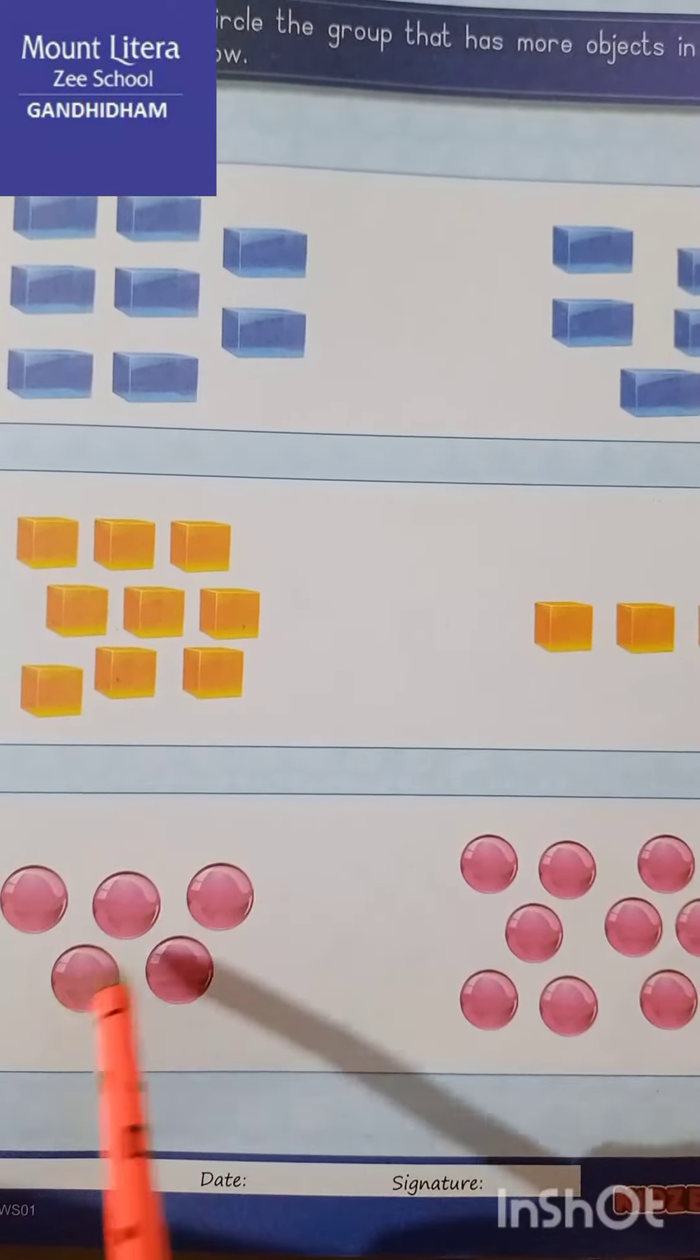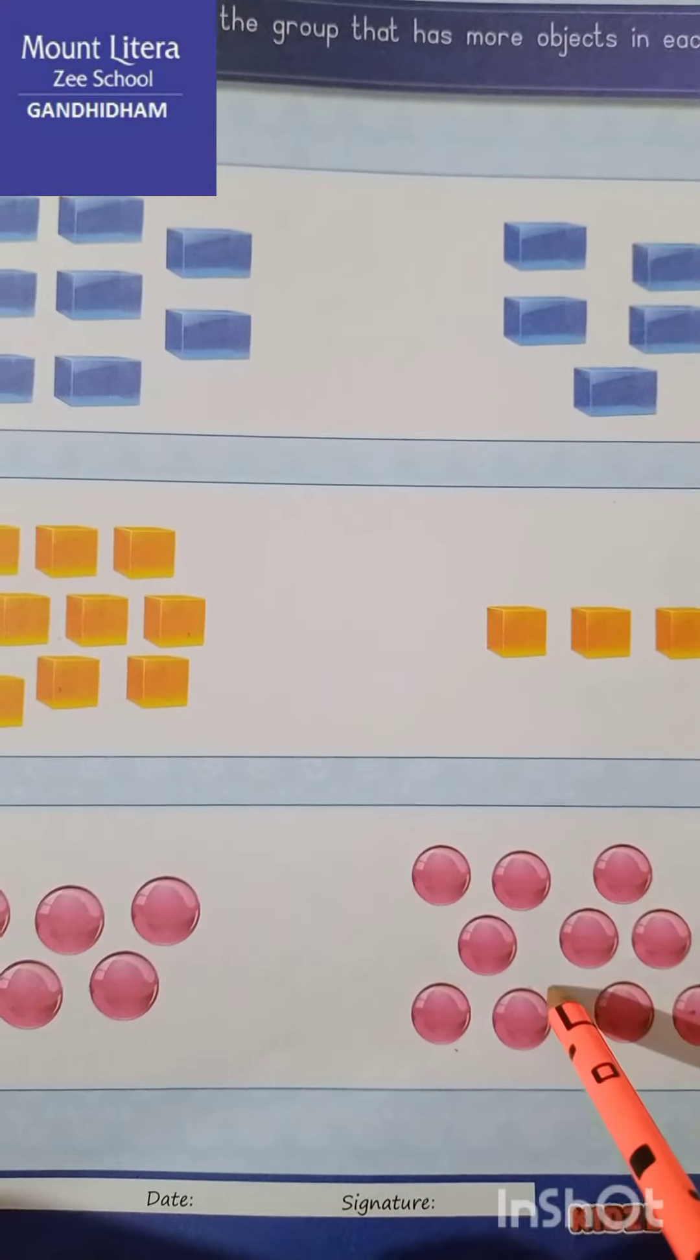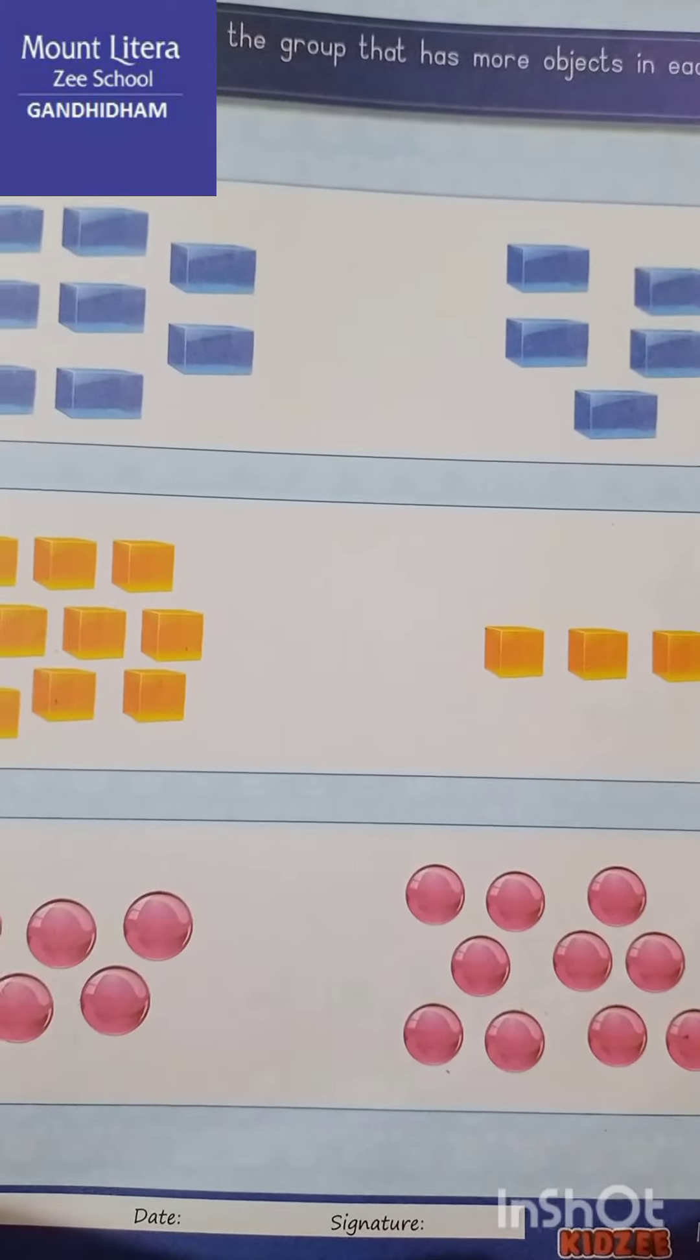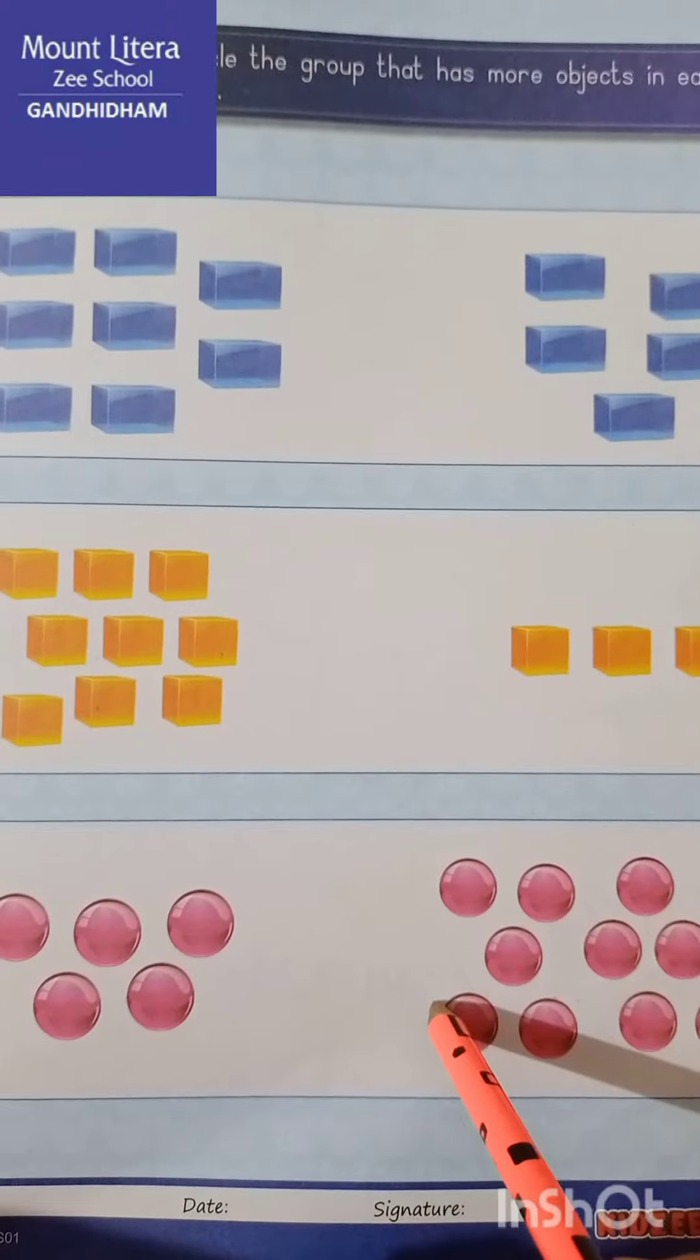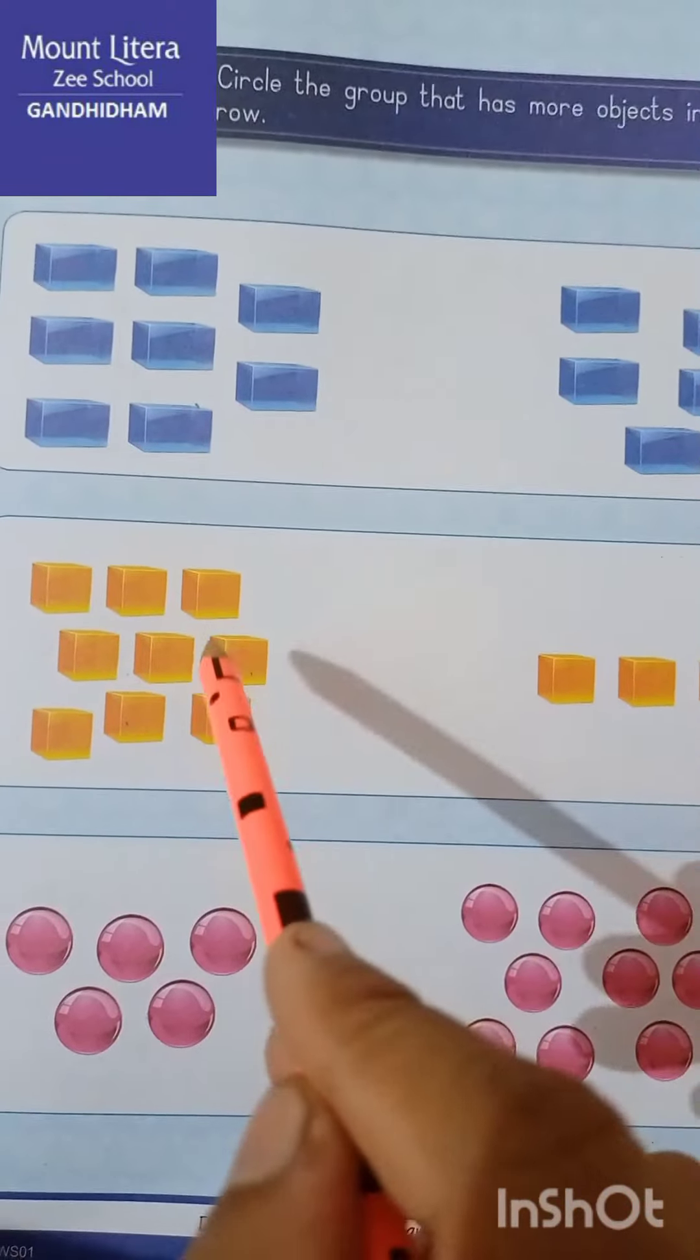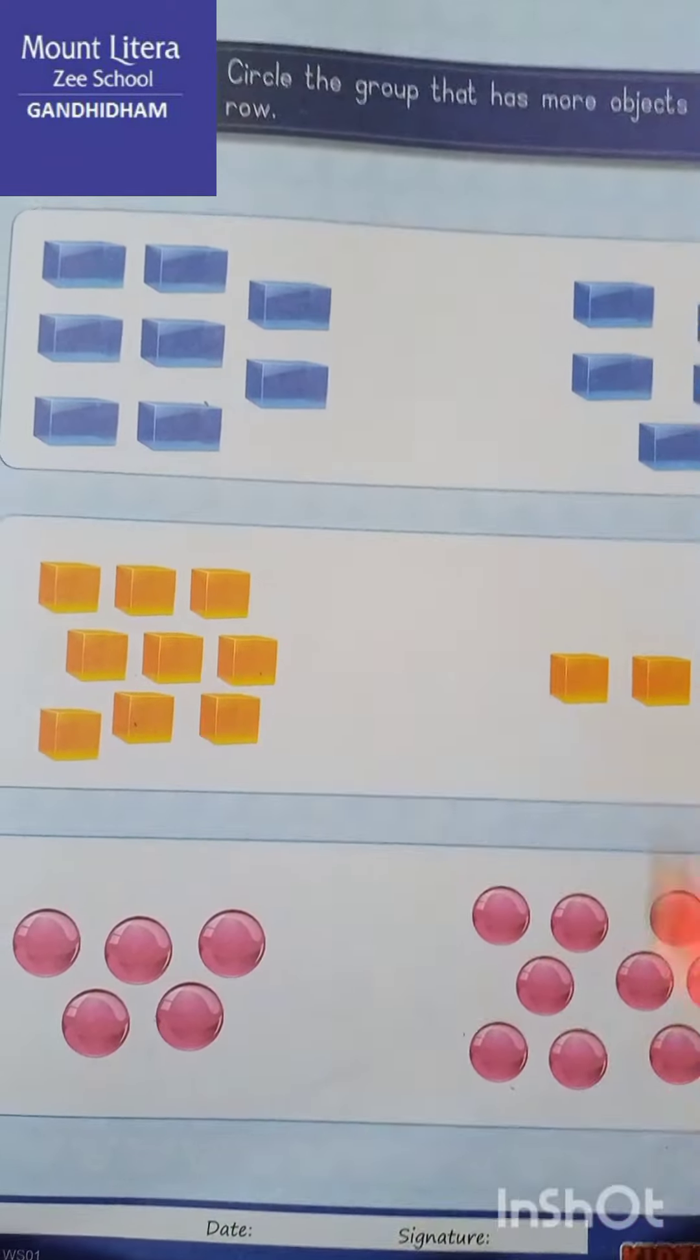which group has more objects? Obviously, this group has more objects. Okay students, so we have to circle on this group. Understand all of you? So circle on this group, this group, and this group, okay.